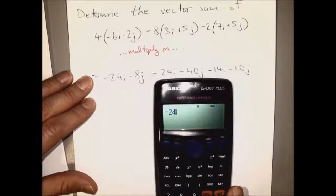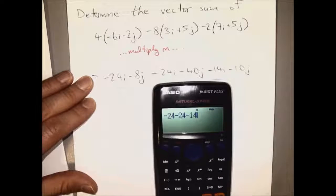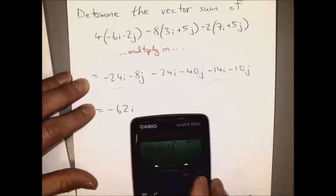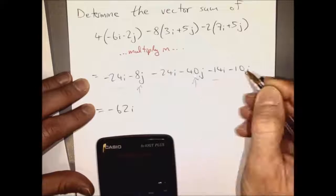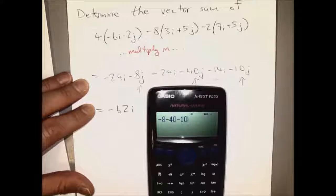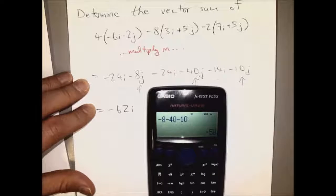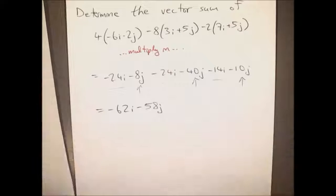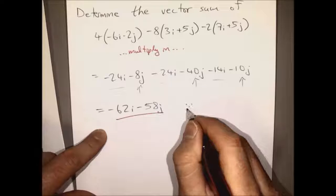And then we add up our i's and add up our j's. So, quite straightforward — 2 marks going for that. That's our answer there.